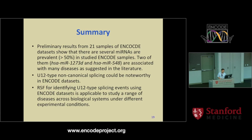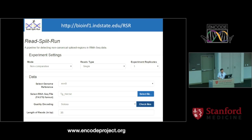In summary, our algorithm can process ENCODE data to identify interesting biological signatures. In the preliminary data for these 21 samples we noticed a lot of U12-type non-canonical splicing available in the ENCODE dataset, more than the U2 type. We have developed a website for this software, and the next version of RitzSplig Fly would take ENCODE samples through the website and classify them by tissue type — and following Tom's talk today, it would be very cool to also separate them into different cell types and report the findings.